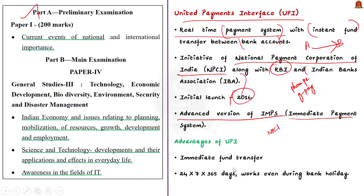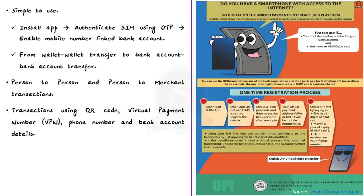Let us discuss the advantages of UPI. First, UPI ensures immediate fund transfer. Second, UPI is available 24x7 on 365 days, so transactions can be done even during bank holidays. Third, it is very simple to use — you can install an application like GPay, which will authenticate your SIM through an OTP process, link your bank account, and you can easily start transactions.